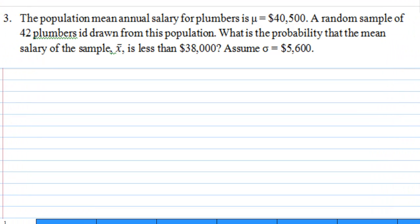This is an example to illustrate the sampling distribution and the central limit theorem. The problem is this: the population mean annual salary for plumbers is mu equal to $40,500. A random sample of 42 plumbers is drawn from this population. What is the probability that the mean salary of the sample, x-bar, is less than $38,000? Assume sigma equal to $5,600.